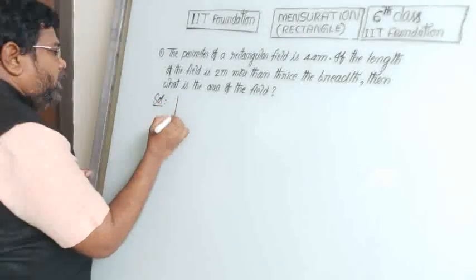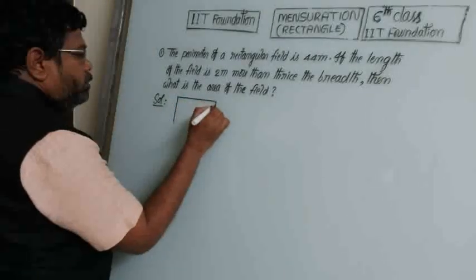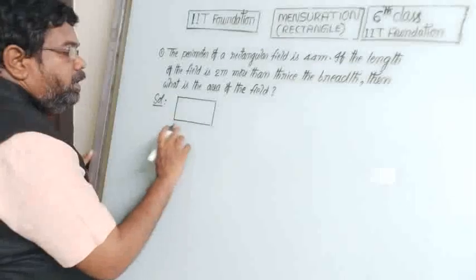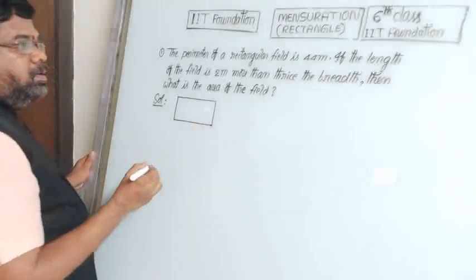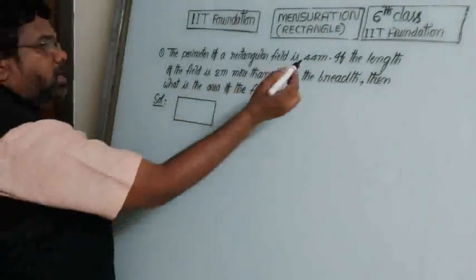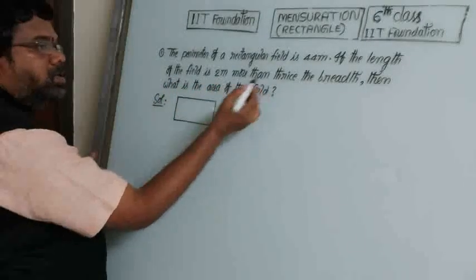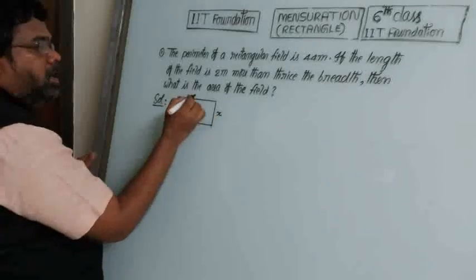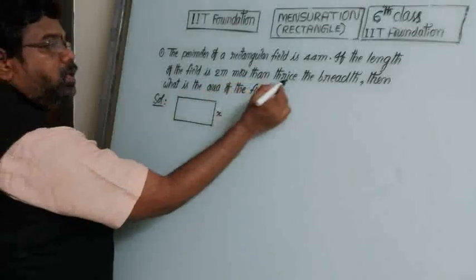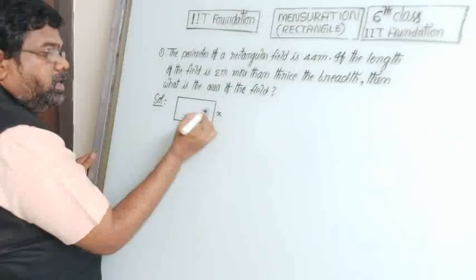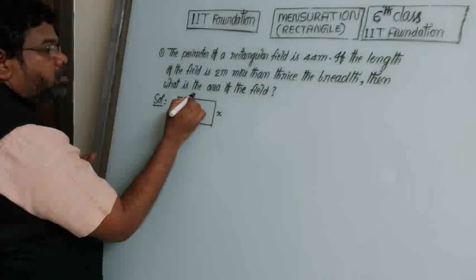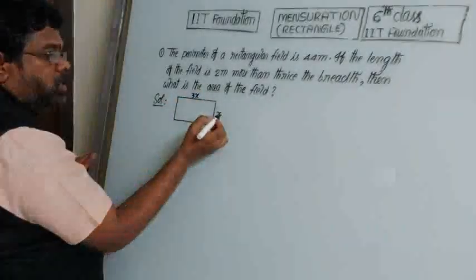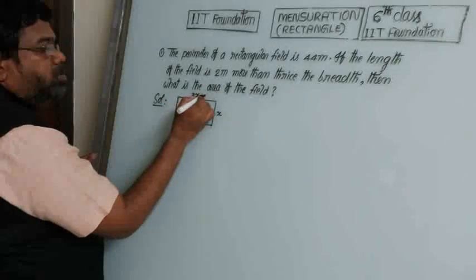A field is in the shape of a rectangle. The length is 2 meters more than thrice its breadth. Let breadth be x. Thrice the breadth is 3x, and 2 meters more than thrice the breadth means length equals 3x plus 2.